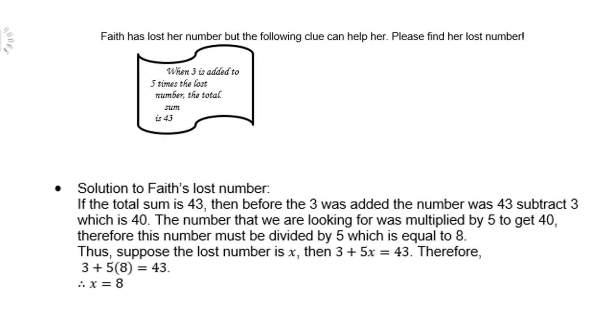We are back with the example of Faith. Solution to Faith's lost number: if the total sum is 43, then before 3 was added the number was 43 subtract 3, which is 40. The number we are looking for was multiplied by 5 to get 40. Therefore, this number must be divided by 5, which equals 8. Thus, suppose the lost number is x, then 3 plus 5x equals 43. Therefore, 3 plus 5 times 8, so x equals 8. Of course, there are other ways of doing it, but perhaps this is the best way to do it.